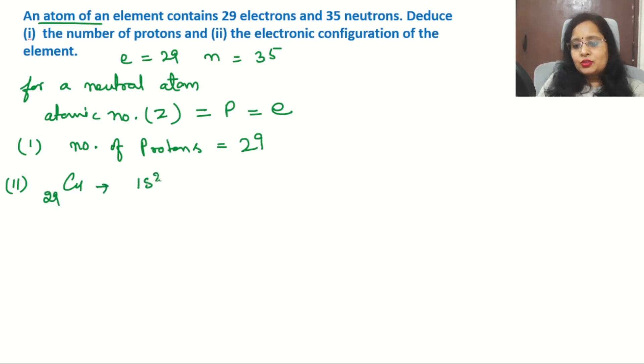The configuration will start like 1s² 2s² 2p⁶ 3s² 3p⁶ 4s² and 3d⁹. This is the regular way of writing the configuration, but in this case this configuration we can say wrong. Now you are asking why?